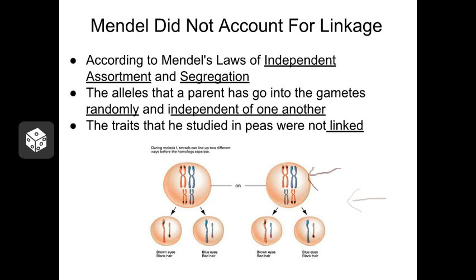Now because of this knowledge, you know that when your body makes egg cells or sperm cells, those cells are going to contain one copy of each chromosome — so 23 total. But there is no way of knowing which of your maternal or paternal genes each of those chromosomes carries.